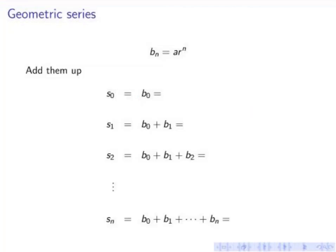Let's start with a geometric sequence first. The series is just adding up those terms. So I start with S_0 which is the first term b_0 which is just a. S_1 is b_0 plus b_1 which is a plus ar.